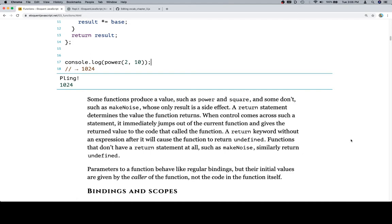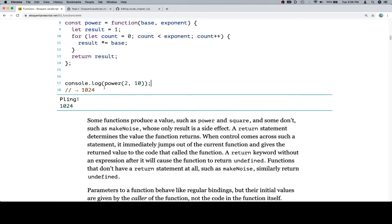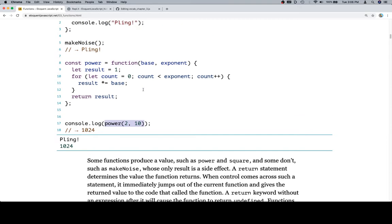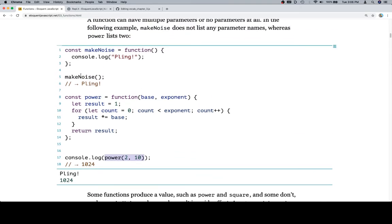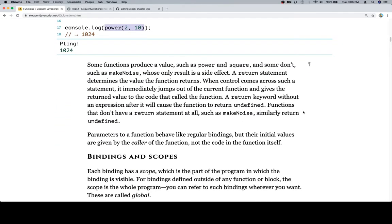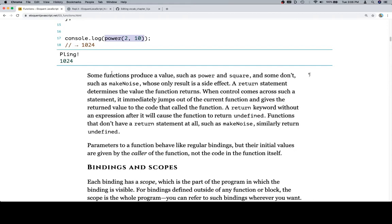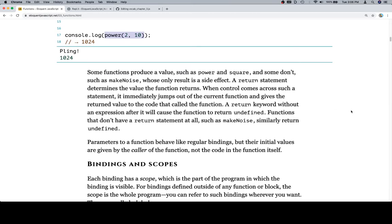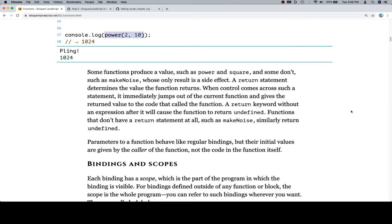So some functions produce a value, such as power and square. And as you can see, when we console.log the function call, we actually get a value in the place of that expression. Same thing happened when we did square. But you'll notice that there isn't anything like that on line 5. And the reason is that line 5 is calling a function that already console.logs something. So some functions produce a value such as power and square and some don't, such as make noise, whose only result is a side effect.